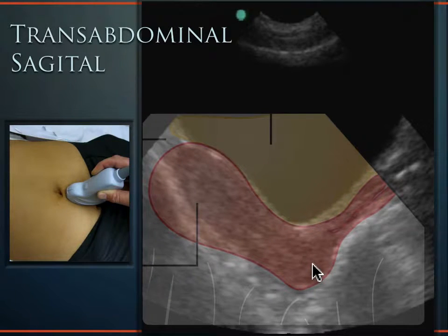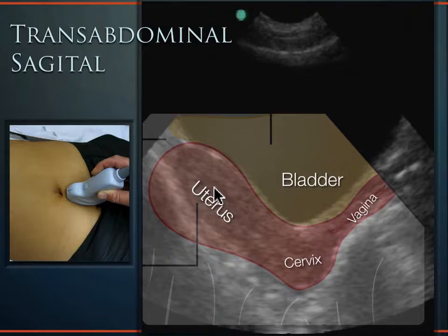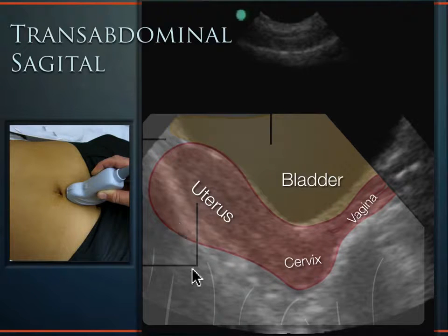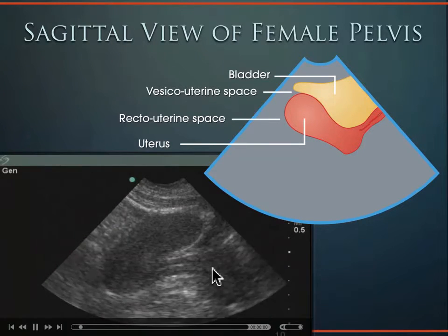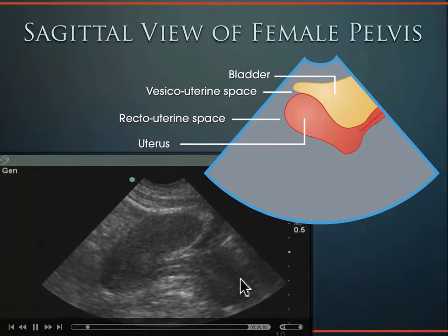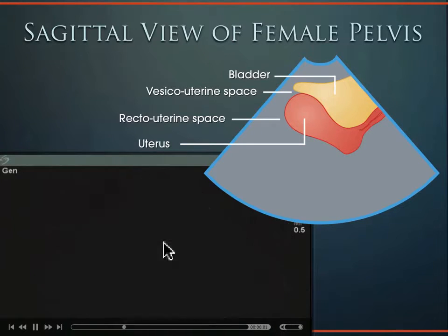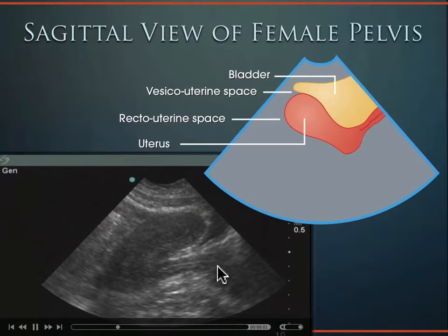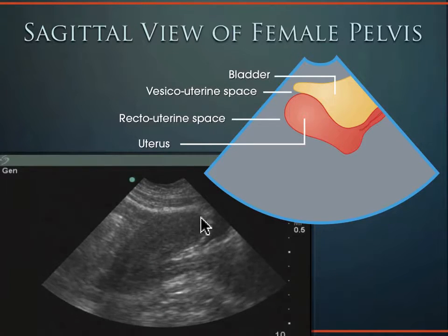Here are the labels on the schematic: the vaginal stripe comes in and terminates at the cervix, here's the anteverted uterus, this is the anterior cul-de-sac or vesicouterine pouch, and this is the posterior cul-de-sac—pouch of Douglas, or rectouterine pouch. This is a woman with an empty bladder—look how flexed the uterus is, almost 160 to 180 degrees coming back on itself. The vaginal stripe comes in, does almost a 180, and comes back towards the fundus of the uterus. As the bladder fills up, it will push the uterus in that direction.